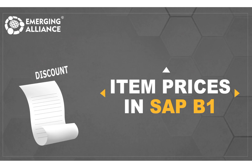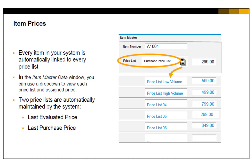In this video, you will get to know in detail about item prices in SAP Business One. In SAP Business One, every item in your system is automatically linked to every price list.